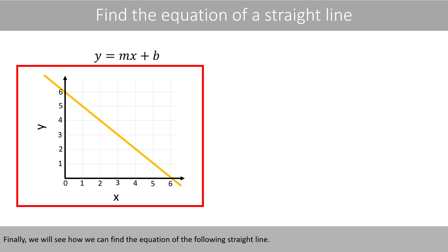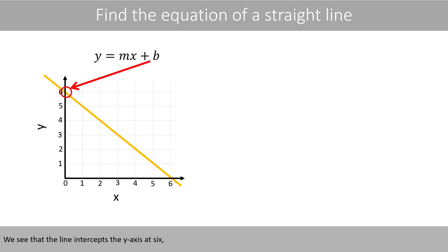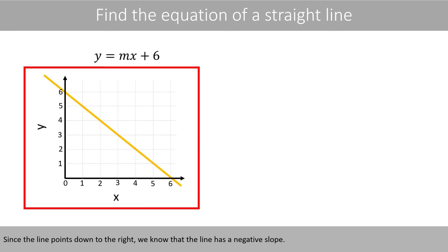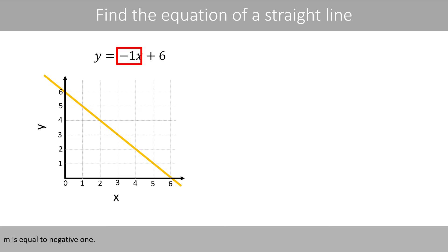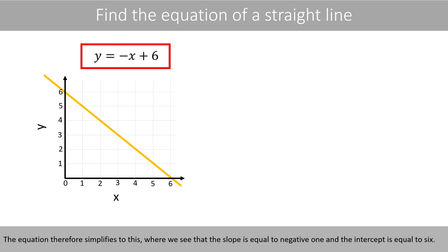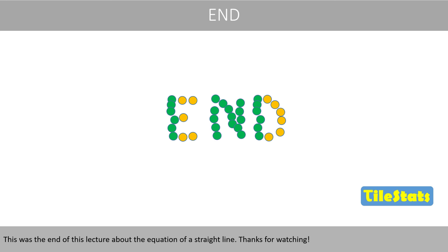Finally, we will see how we can find the equation of the following straight line. We see that the line intercepts the Y axis at 6, which means that we set B to 6. Since the line points down to the right, we know that the line has a negative slope. Since Y decreases by 1 unit when X increases by 1, M is equal to negative 1. The equation therefore simplifies to this, where we see that the slope is equal to negative 1 and the intercept is equal to 6. This was the end of this lecture about the equation of a straight line. Thanks for watching!